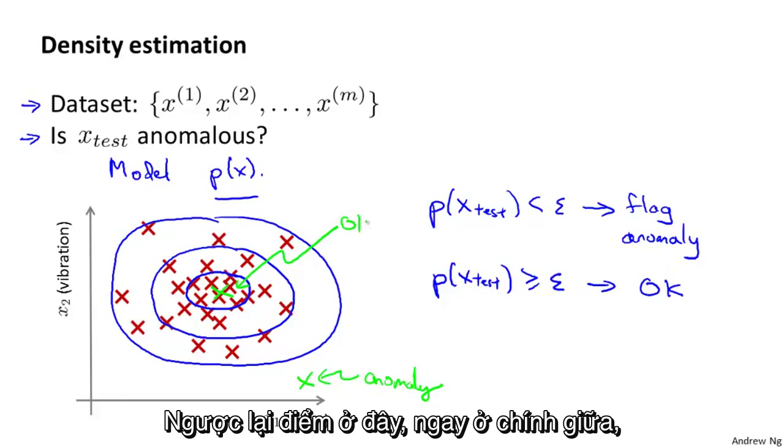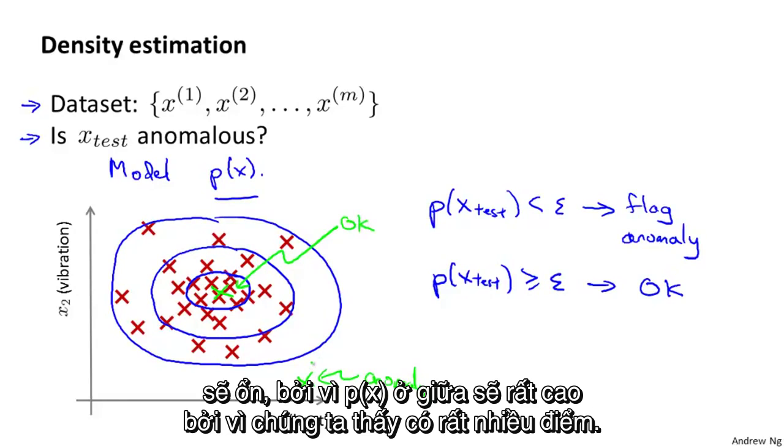Whereas the point that's way in there, right in the middle, this would be okay because P of X right in the middle of that would be very high because we've seen a lot of points in that region.